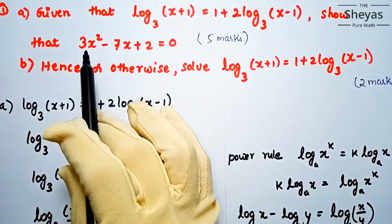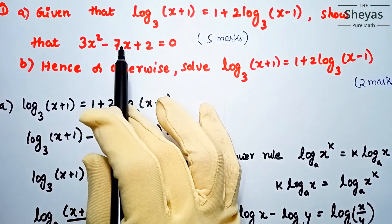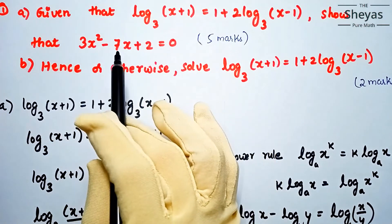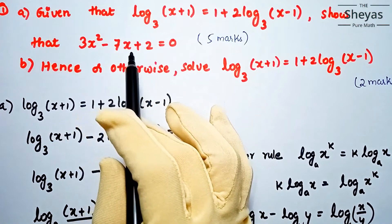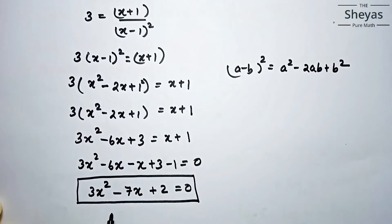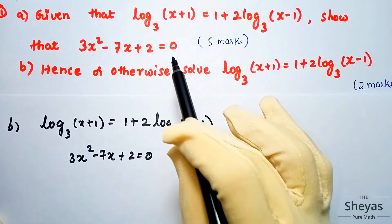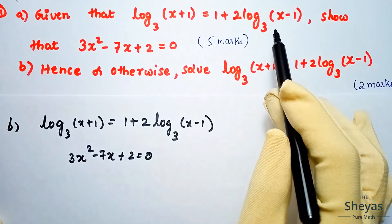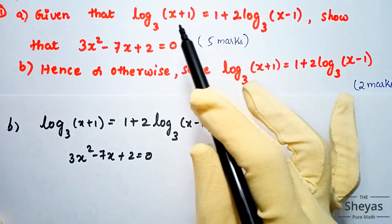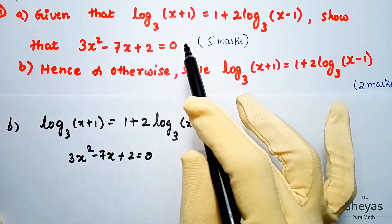So we have proved that 3x² - 7x + 2 = 0, which is exactly what Part A required. Thus Part A is completed. What we have done is taken the given logarithmic equation and derived 3x² - 7x + 2 = 0 by converting logarithm to exponential form.